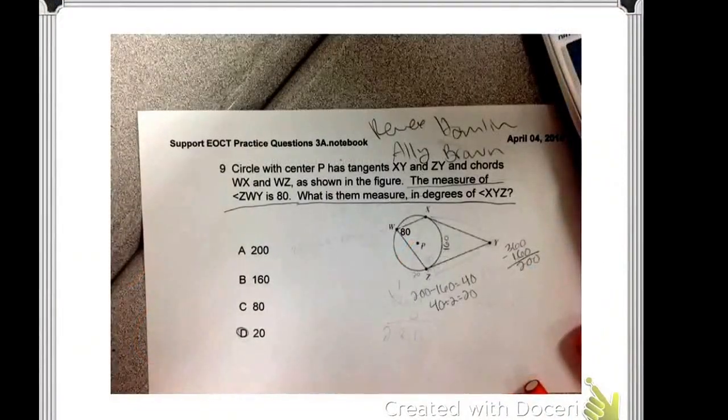Okay, well first we do 80 plus 80 which is 160, then we do 360 minus 160 which is 200. 200 minus 160 equals 40, and 40 divided by 2 equals 20.